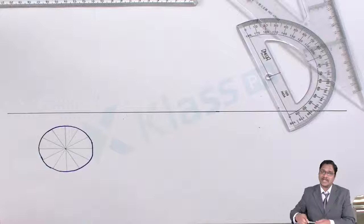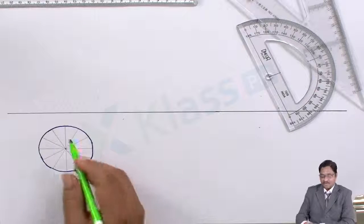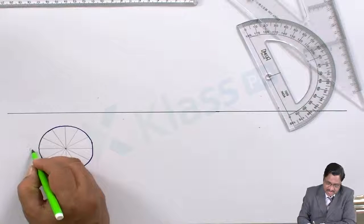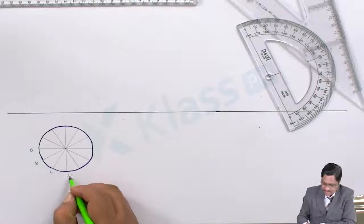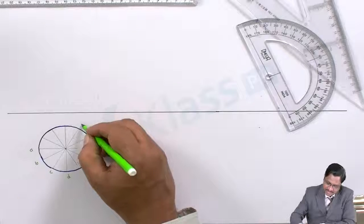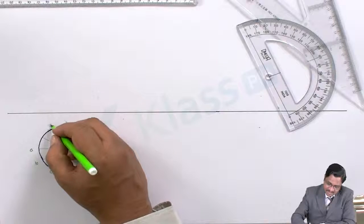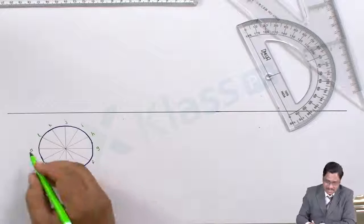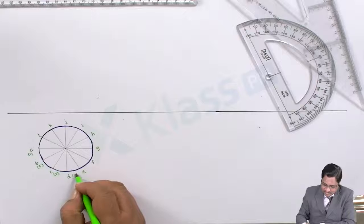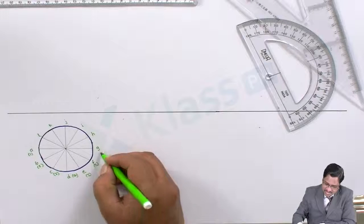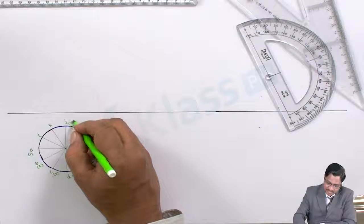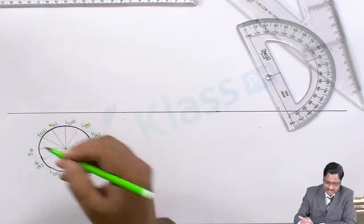Since it is a cylinder, the radial division points represent both top and bottom reference points. The top reference points are labeled A, B, C, D, E, F, G, H, I, J, K, L. The bottom points are given numbers: 1, 2, 3, 4, 5, 6, 7, 8, 9, 10, 11, 12.